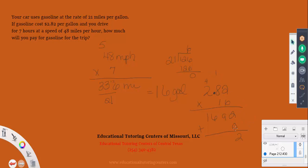Completing the multiplication: 1 times 2 is 2, 1 times 8 is 8, 1 times 2 is 2. Adding everything: the result has two decimal places, so we move the decimal two places in. The total cost of gasoline for the trip is $45.12.